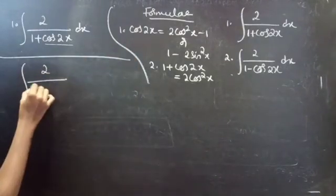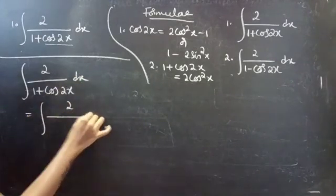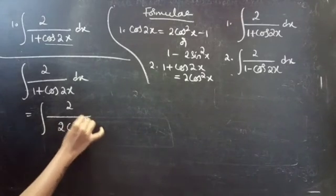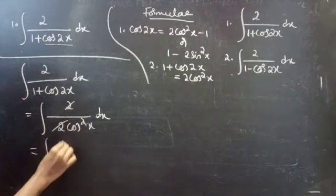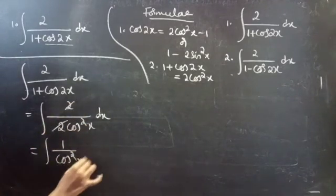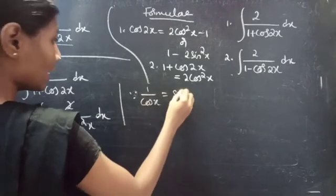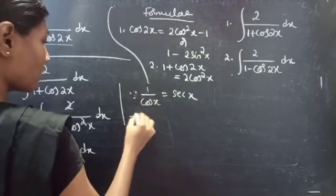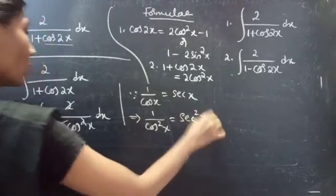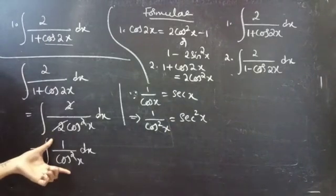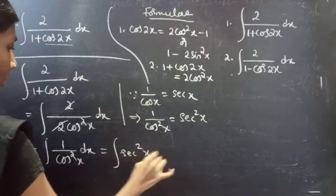Now we are going to replace 1 plus cos 2x by 2 cos square x. Consider integral 2 by 1 plus cos 2x into dx, which is equal to integral 2 by 2 cos square x into dx. The 2s get cancelled, so you can write it as 1 by cos square x. Since the reciprocal of cos x is secant x, squaring both sides gives 1 by cos square x equals to secant square x. So you can replace 1 by cos square x with secant square x, giving integral of secant square x into dx.